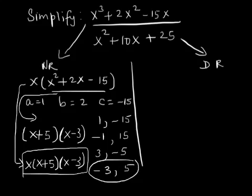We will now factor the denominator x squared plus 10x plus 25. We see that it is a trinomial with a, which is the coefficient of x squared, equal to 1, and therefore we find integers that multiply to 25 and add to 10.